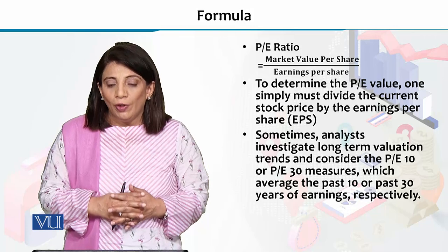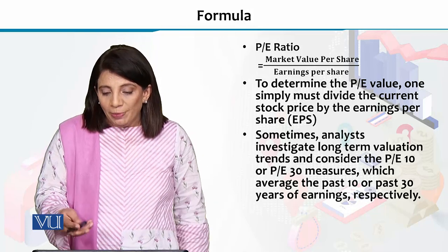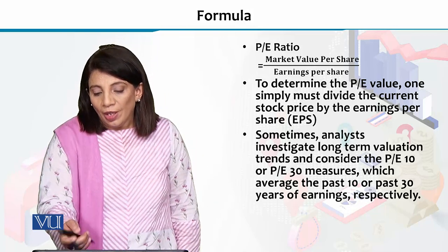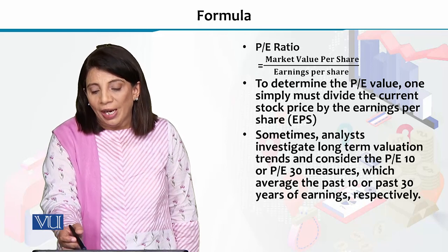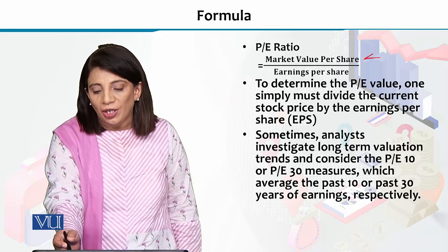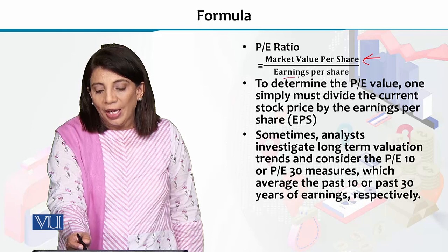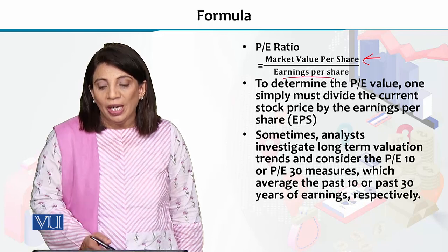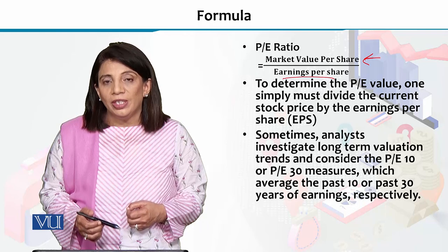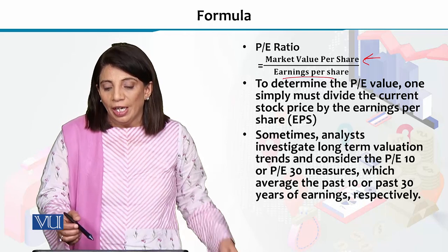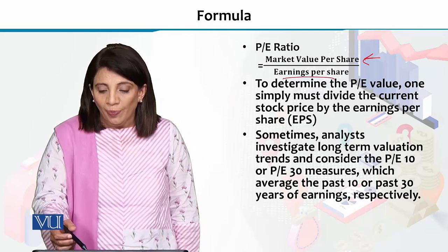If we look at the formula for the PE ratio, it is basically the value obtained by dividing market value per share by earnings per share. So you divide market value per share by earnings per share, and you will be able to come up with the PE ratio.